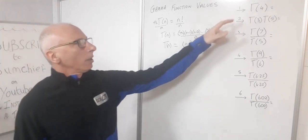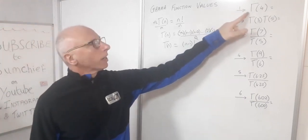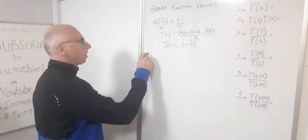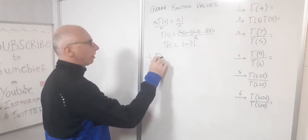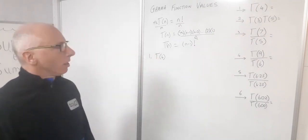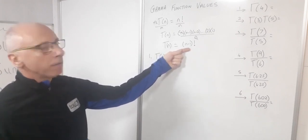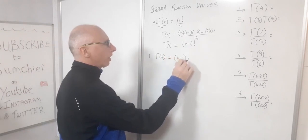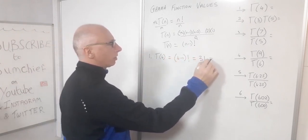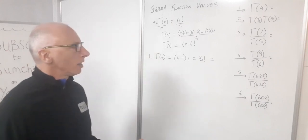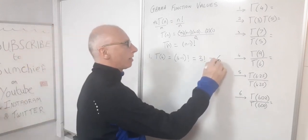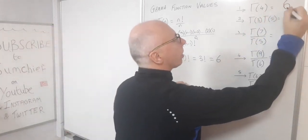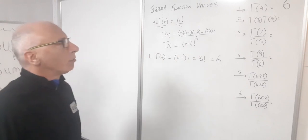Let's calculate the gamma value for 4. Question 1: gamma(4). Using our equation, gamma(n) = (n-1) factorial, so gamma(4) = (4-1) factorial = 3 factorial. We know 3 factorial is 1 times 2 times 3, which equals 6. So our first gamma value is 6.